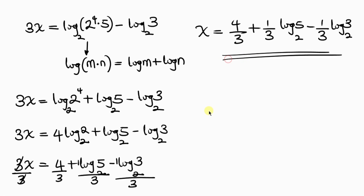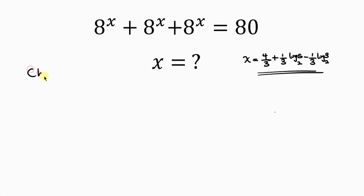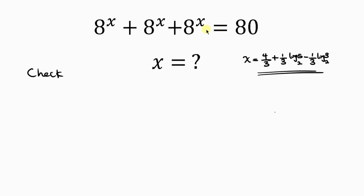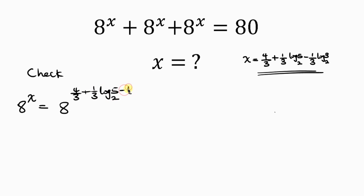Now let's prove if this is correct. We have the value of x which we've already solved for. The left-hand side has similar terms, 8 to the x, so I'll pick just one and later add the value into 3 places to see if we get 80. So I take 8 to the x, and substitute the value of x: 8 to the 4 over 3, plus 1 over 3 log 5 base 2, minus 1 over 3 log 3 base 2.